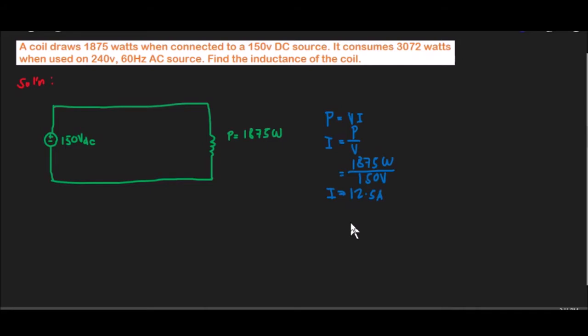Because the supply is DC, the power consumed — 1875 watts — is purely the resistance of the coil. It is consumed by the resistance of the coil. So we could solve for the resistance of the coil using Ohm's law.